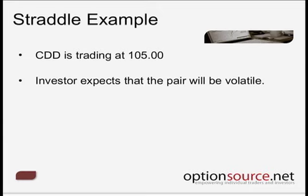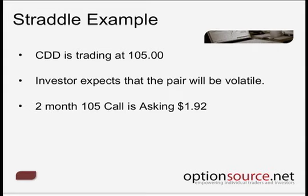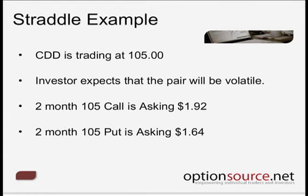Looking at it from that perspective, we would look at the two-month 105 call options, which are asking $1.92. We would also then take a look at the two-month 105 put options, which are asking $1.64. Now, there's always going to be a discrepancy in the call options versus the put options in terms of their pricing.